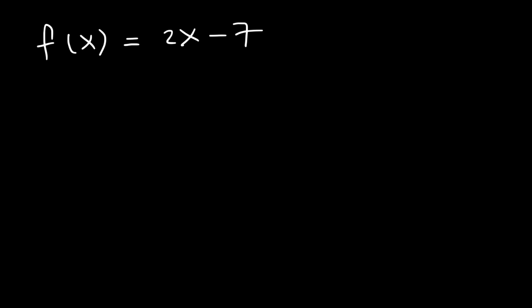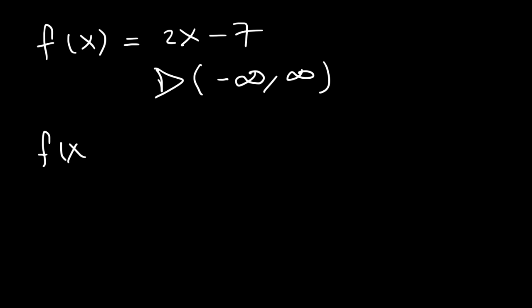So how do you find the domain of a function? Consider the function 2x minus 7. What is the domain of this function? What is the list of all possible x values that can exist in this function? Whenever you have a linear function like this one, the domain is all real numbers. So in interval notation, x could be anything — it could range from negative infinity to positive infinity.